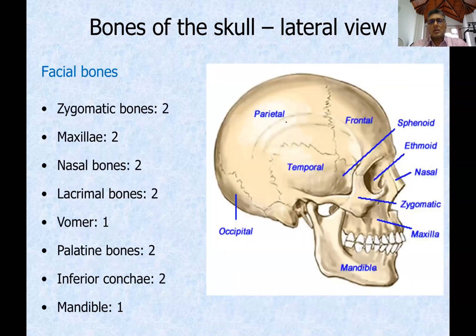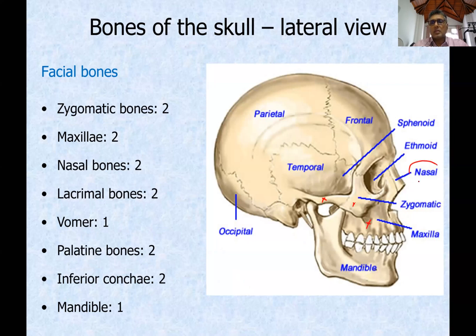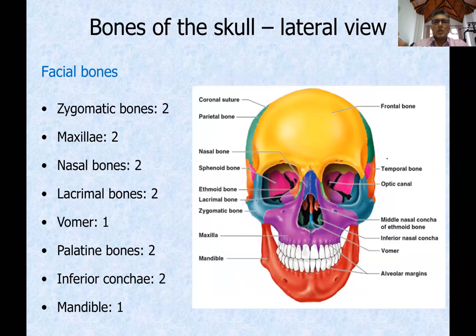When it comes to the bones contributing to form the facial skeleton, you have two zygomatic bones on either side, then two maxillae on either side, then two nasal bones, then two lacrimal bones — the lacrimal bone is somewhere here. This is the lacrimal bone, shown in green colour here.